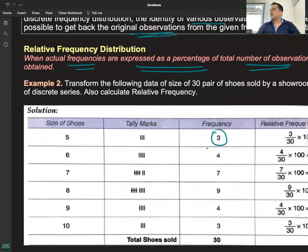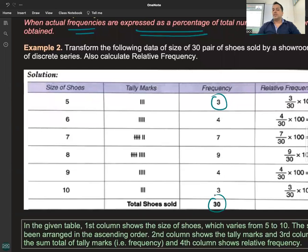It becomes 10 percent. This means 10 percent of the total shoes sold were of size 5.